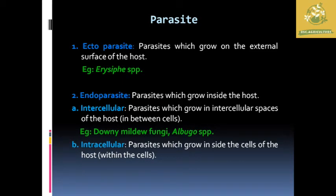Parasites are also classified based on how they grow and live in the host plant into two types: ectoparasites and endoparasites. The ectoparasite is a parasite that grows on the external surface of the host plant. An example is Erysiphe species.